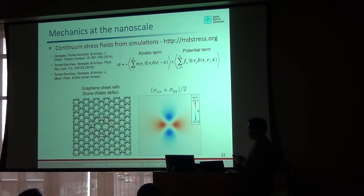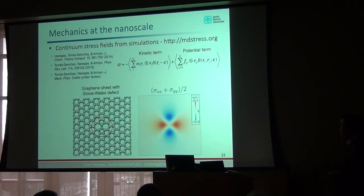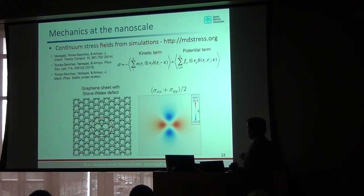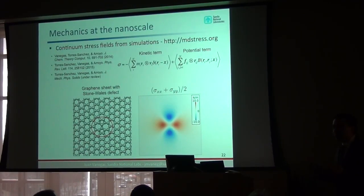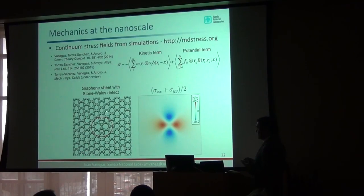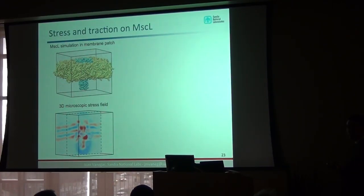For example, here's a graphene sheet where we simulated a large sheet and introduced a Stone-Wales defect. We calculated the stress, and this is what the normal component — the diagonal component — looks like in terms of surface tension. With this, we can see from a mechanical perspective what's happening near the defect without knowing much about the particular interactions. We can then expand this into our membrane protein system and calculate a 3D stress field.